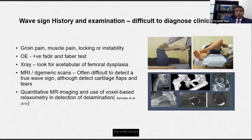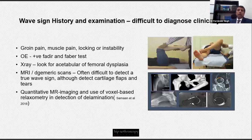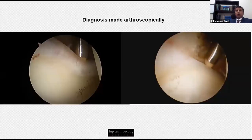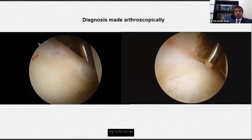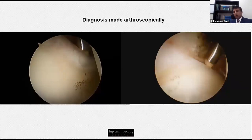Unfortunately, history, examination, and conventional MRI scans yield very little in specifically diagnosing the wave sign. More recently, quantitative MRI imaging using voxel-based relaxometry is more helpful in detecting delamination of the cartilage, though this has been very difficult without traction MRI scans. The gold standard for diagnosing wave signs remains arthroscopic — pushing on the chondrolabral junction and observing cartilage delamination, usually associated with a bubble sign or carpet sign.